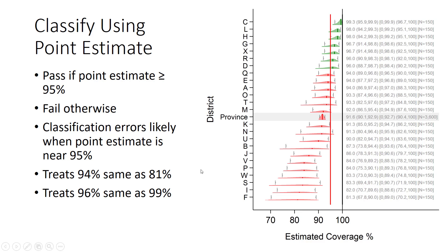In the first scheme, we use the point estimate to classify. If the point estimate is above 95%, we say congratulations to that district, we classify them as pass, and we color them green. If the point estimate is below 95%, we color them red and tell them they failed to reach the target. This is a logical and simple classification rule.